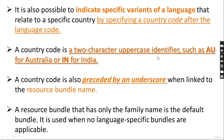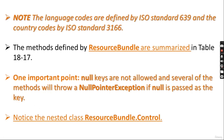There is one more option available to indicate a specific variant of a language particular to a country. A country code is a two-character uppercase identifier, such as AU for Australia and IN for India. The country code is also preceded by an underscore when linked to the resource bundle name. A resource bundle that has only the family name is the default bundle, used when no language-specific bundles are applicable.